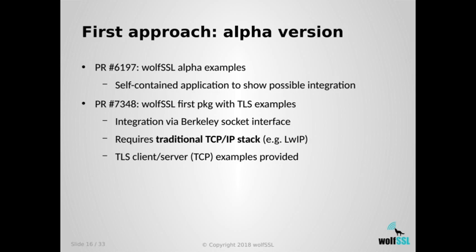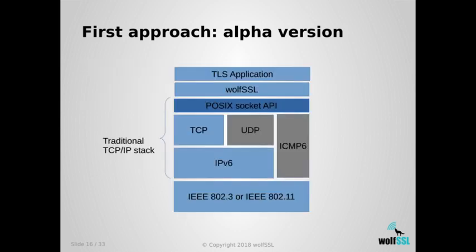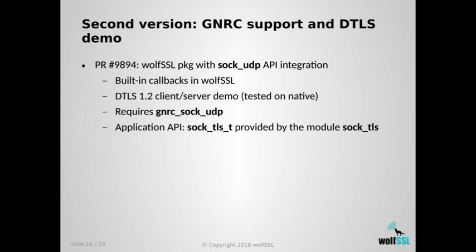The community's comment at that point was: what you're doing now is using the POSIX API on top of the traditional TCP/IP stack, which we support — but we'd actually like to go in the direction of a more portable situation where we can run this on top of 6LoWPAN, 802.15.4, etc. So the suggestion was to use the sock interface. What I've done so far is use the sock UDP API integration and build the callbacks for this integration inside WolfSSL, providing on top of the existing UDP/IP GNRC support yet another level of abstraction for TLS sock.